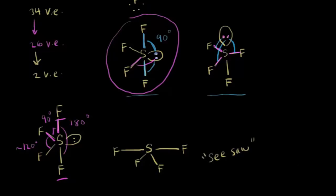Let's think about why it's called a seesaw. If you've ever been on a playground seesaw, imagine a little kid on one side — when weight goes on that side, it goes down, and the other side goes up. That intuition explains why we call this a seesaw shape. In the next video we'll do two more examples of molecules and ions that have five electron clouds.